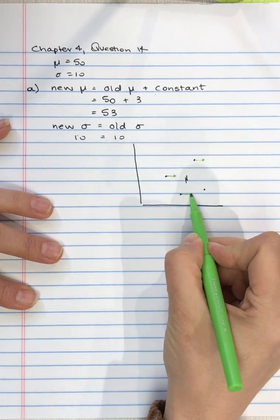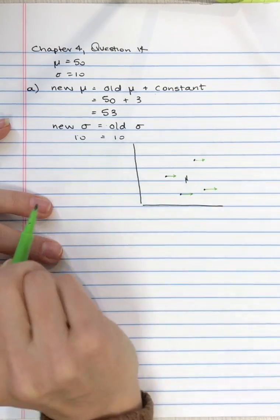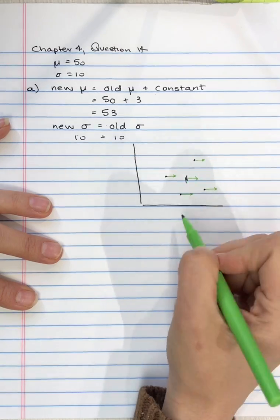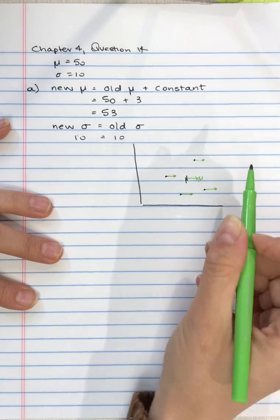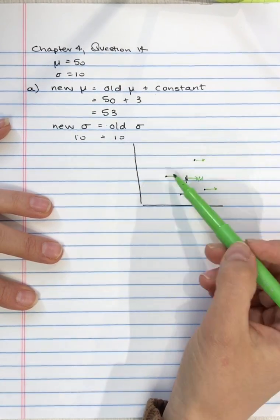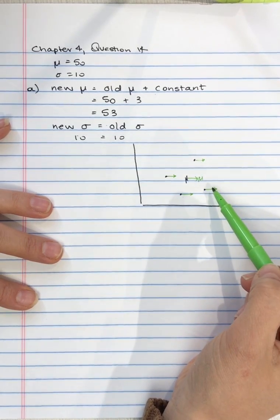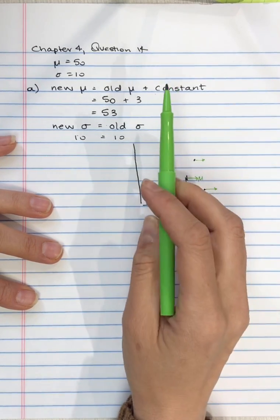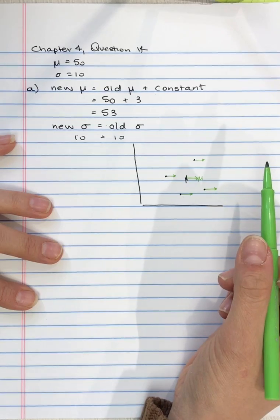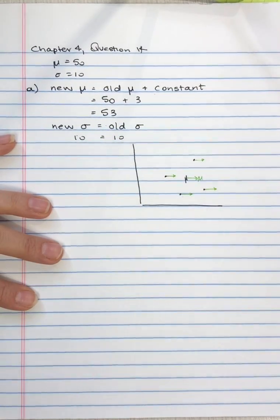But the position of each score relative to the mean hasn't changed if you're adding or subtracting a constant, and so the standard deviation hasn't changed.